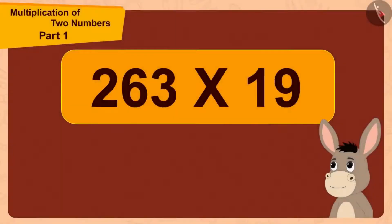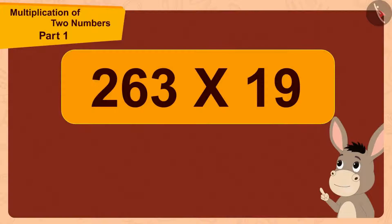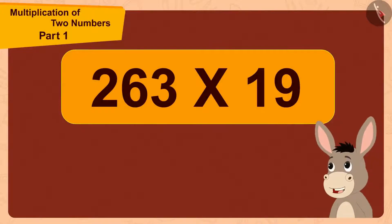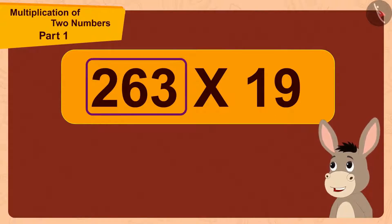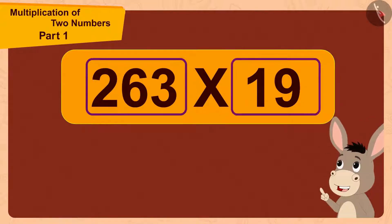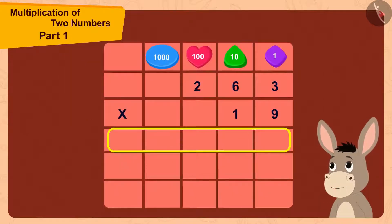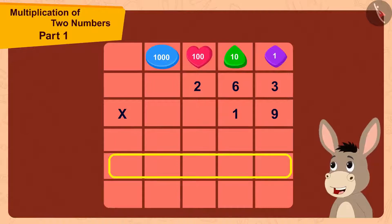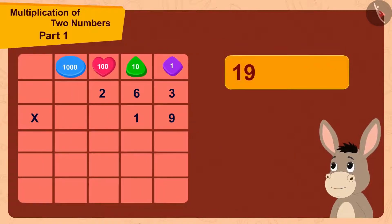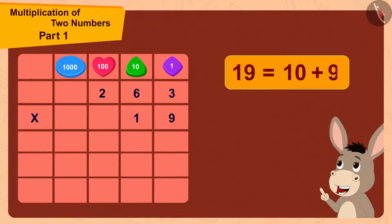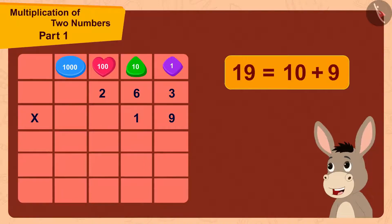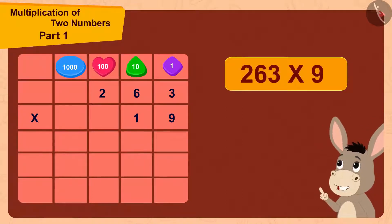Bhola thought, here we are multiplying the three-digit number 263 by the two-digit number 19. Since 19 is a two-digit number, I can do this multiplication in two steps. I can write 19 by adding 10 and 9. So first I will multiply 263 with 9, then I will multiply 263 with 10.